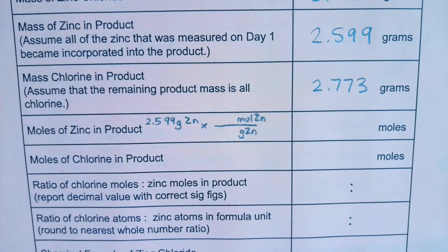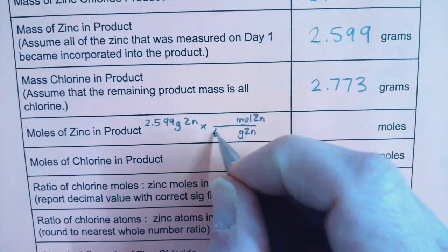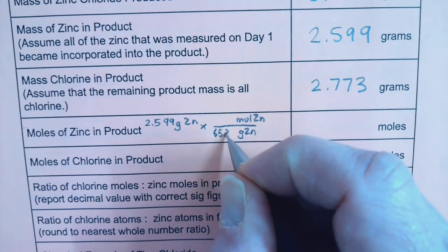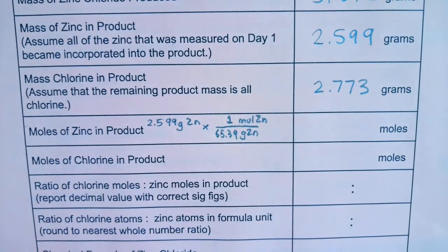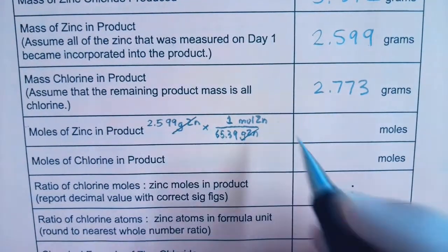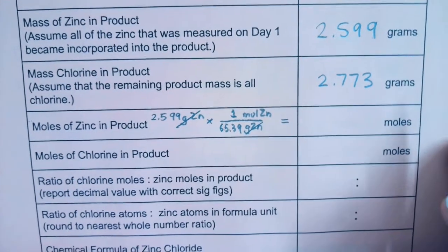Zinc is atomic number 30. And I have a value of 65.39 grams is equivalent to one mole of zinc. So my grams of zinc will cancel and I'll end up in moles.